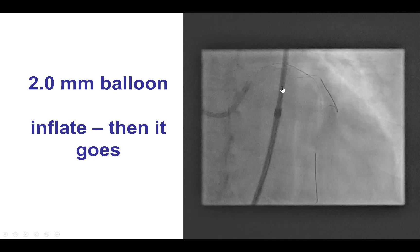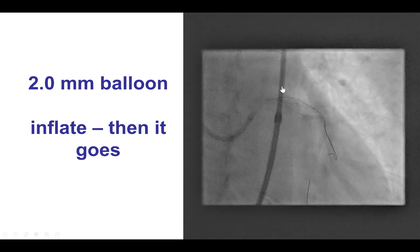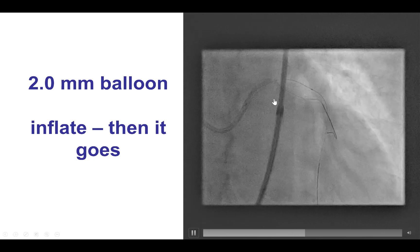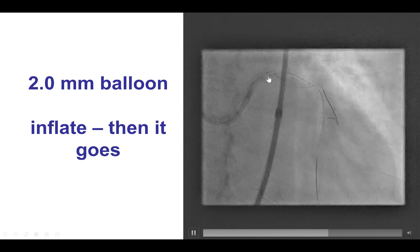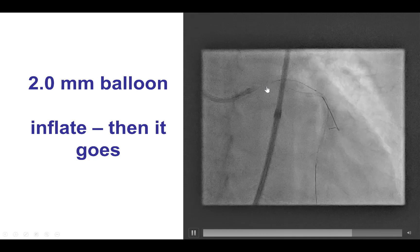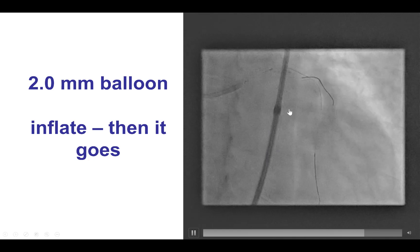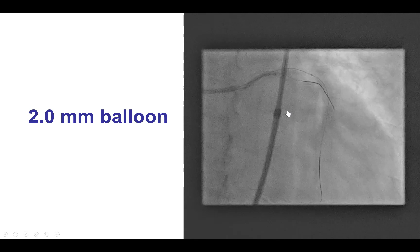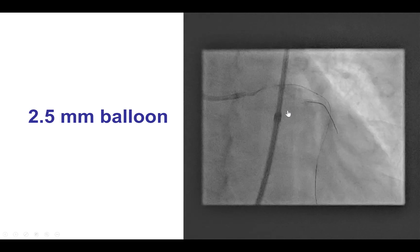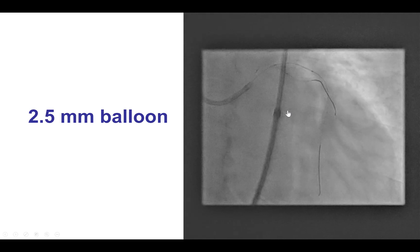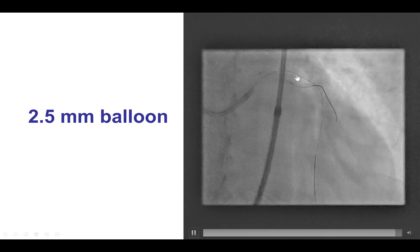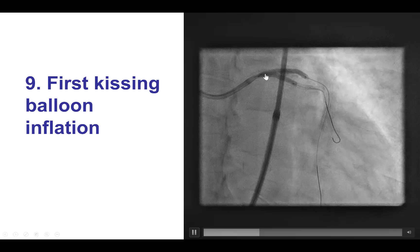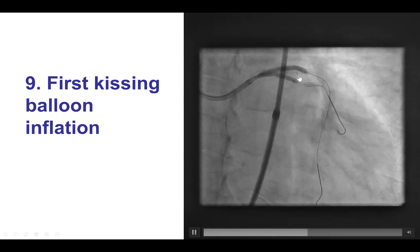We then upsized to a 2.0 mm balloon that also had a hard time going, but we inflated it, and after inflation and deflation it could be advanced into the circumflex. Eventually we were able to insert the 2.0 mm balloon and performed the first kissing balloon inflation between the LAD and the circumflex.